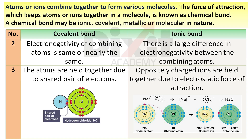Point number 3. In a covalent bond, atoms are held together due to a shared pair of electrons. In an ionic bond, oppositely charged ions are held together due to electrostatic force of attraction.